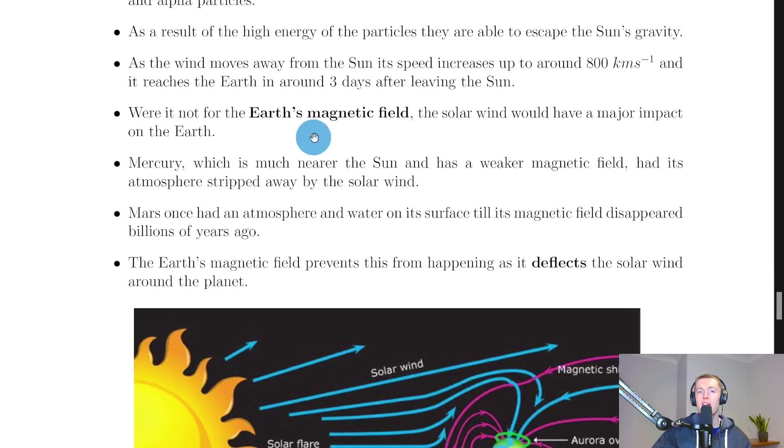Were it not for the earth's magnetic field, the solar wind would have a major impact on the earth. Mercury, which is much nearer the sun and has a weaker magnetic field, had its atmosphere stripped away by the solar wind. Mars once had an atmosphere and water on its surface till its magnetic field disappeared billions of years ago. But the earth's magnetic field prevents this from happening as it deflects the solar wind around the planet. So the earth's magnetic field is very important for life to exist on earth because without it we wouldn't have an atmosphere.